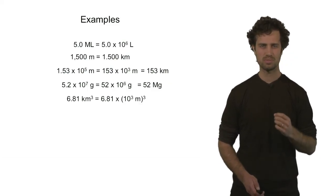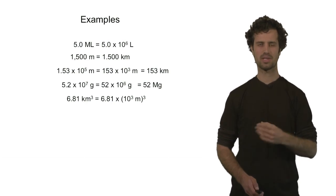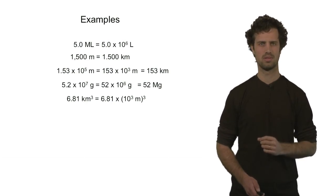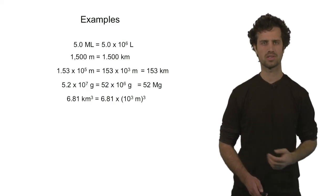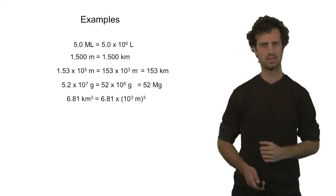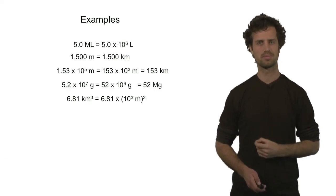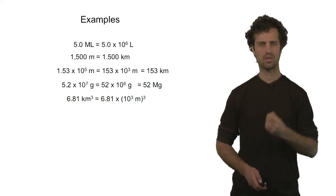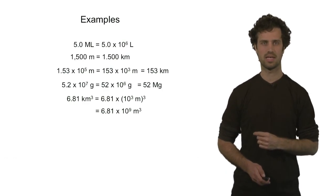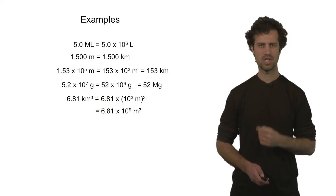Finally, 6.81 kilometers cubed equals 6.81 times ten to the third meters, all cubed. Because a kilometer is ten to the third meters. If you cube everything in parentheses, that means you have to cube ten to the third and cube the meter. If you cube ten to the third, you arrive at ten to the ninth. So this number can be rewritten as 6.81 times ten to the ninth meters cubed.